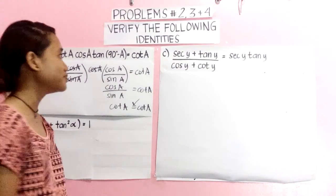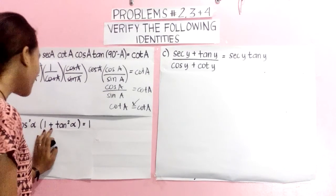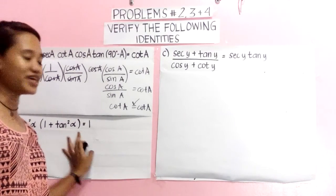We move to problem number 3. Cos squared alpha times 1 plus tan squared alpha is equal to 1.